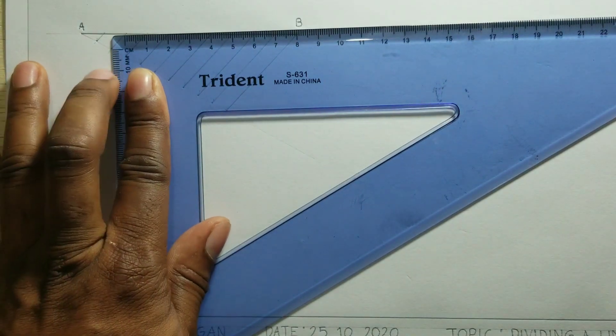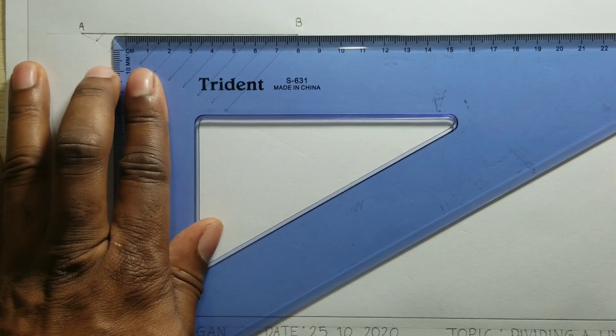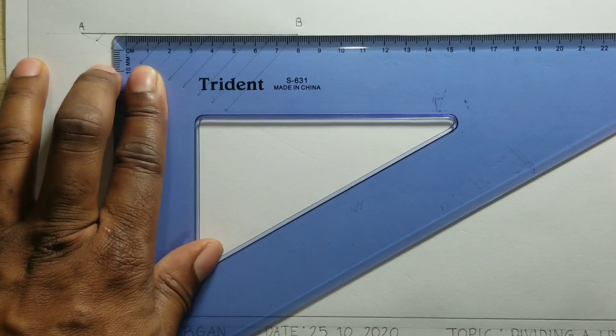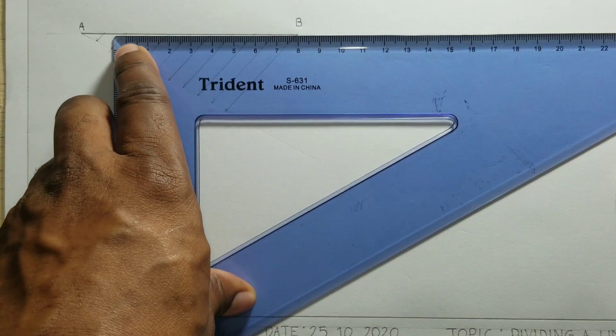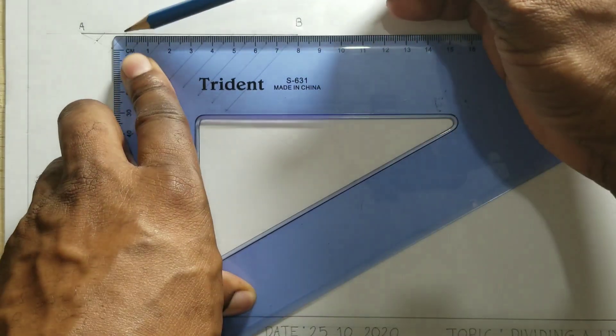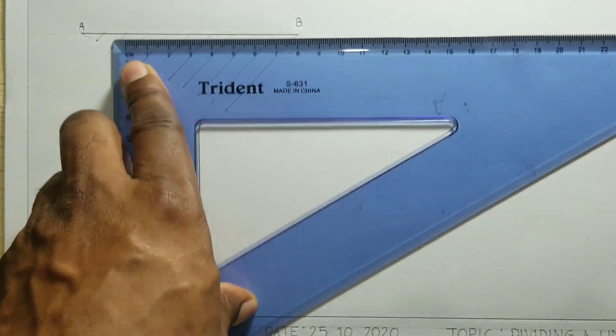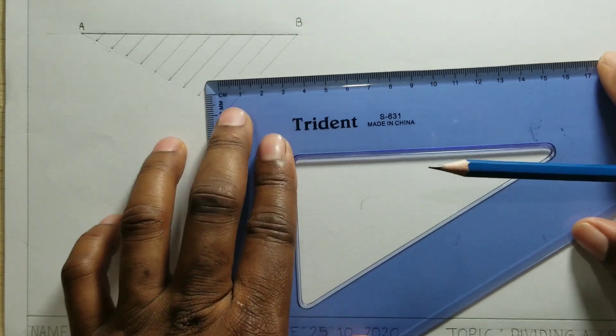Now, based on this measurement, I'm now getting 10 millimeters or 1 centimeter right there. So, from here to here is 1 centimeter, and I'm also going to choose another one randomly.